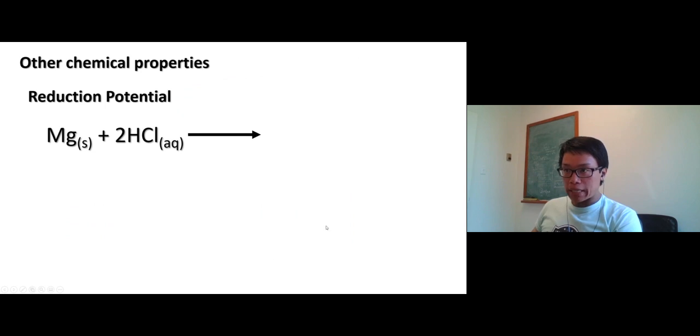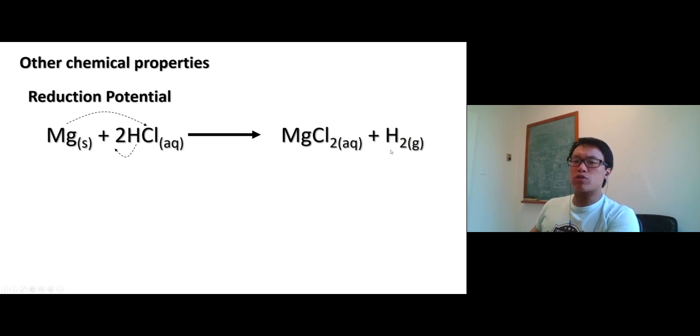Now, other types of chemical properties. We have a reaction with hydrochloric acid. So we have magnesium dumped into the solution of hydrochloric acid. So it just replaced. So magnesium replaced hydrogen, chlorine, hydrogen comes out, becomes hydrogen gas. We'll talk about this reaction later.